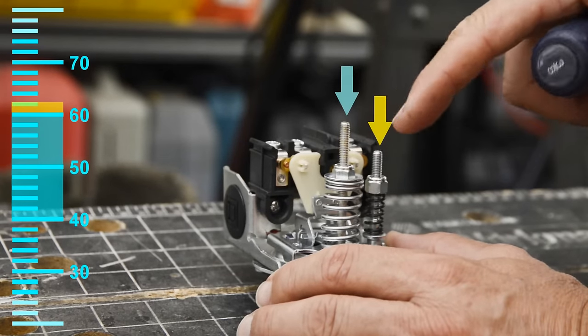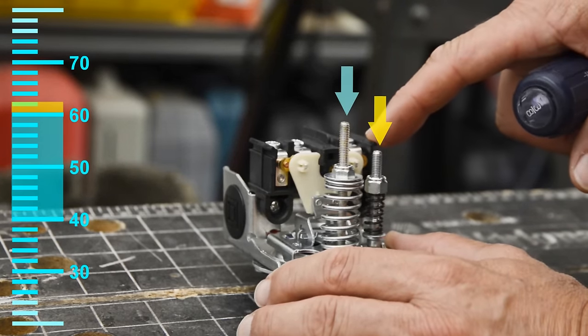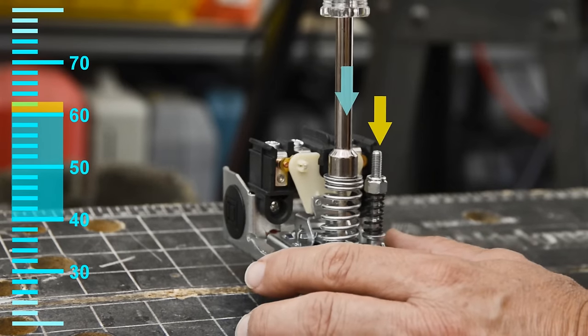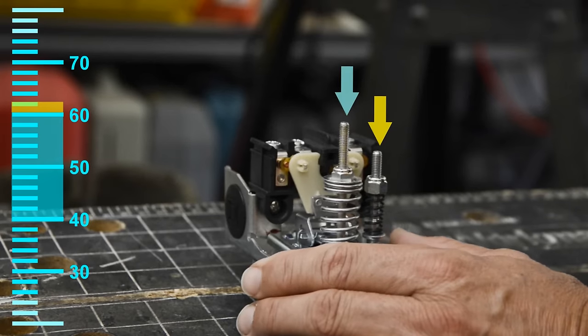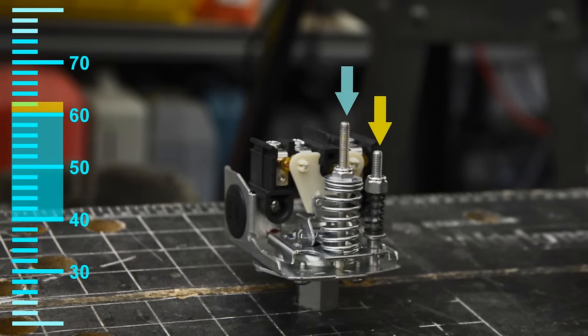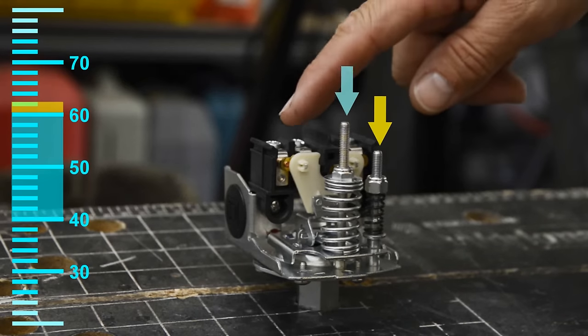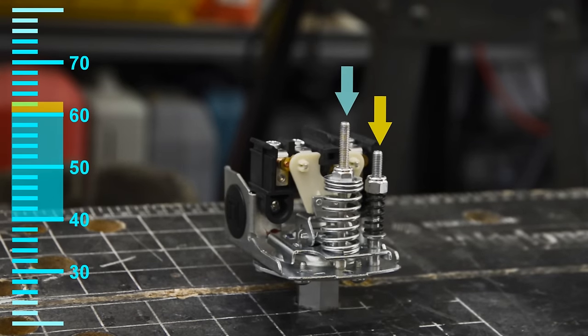We're going to show you how the contacts open and close, and where they open and close at. So I'm going to tighten it down three or four turns, and then I'm going to increase the pressure until it cuts off, and you'll notice it opening the contacts.